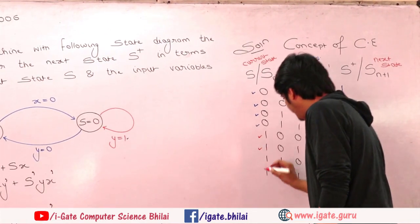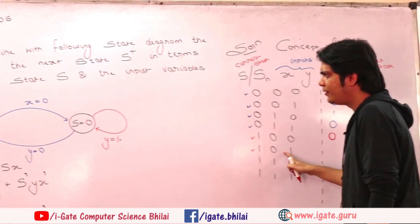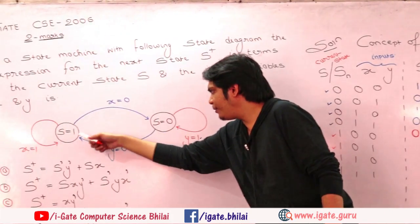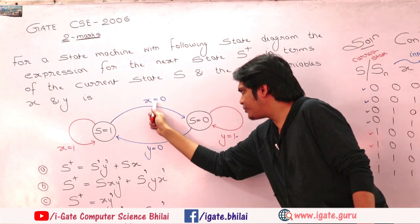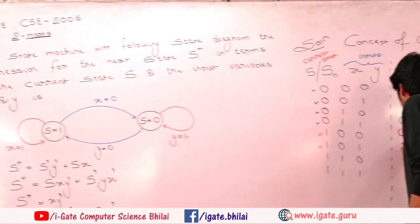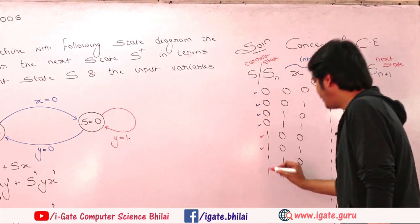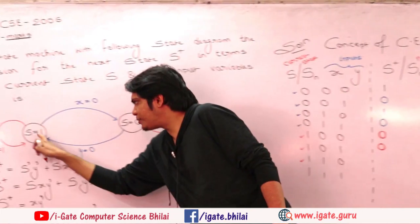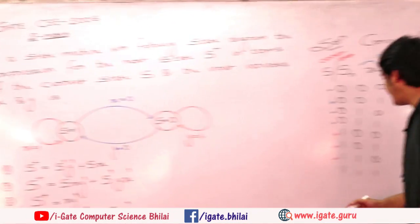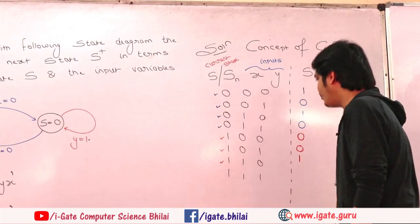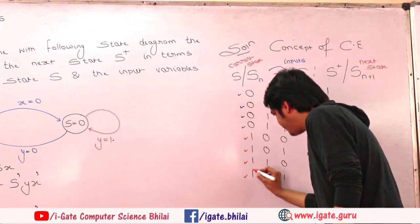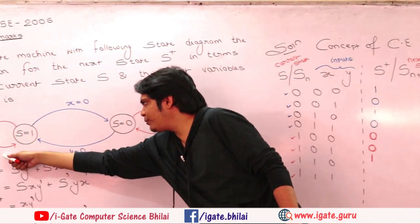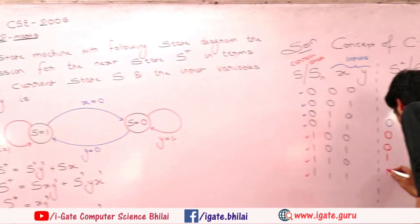For S=1, X=0, Y=1: when X=0, independent of Y, transition happens and output goes to 0. For S=1, X=1, Y=0: output remains unchanged — it was 1 before, still 1. For S=1, X=1, Y=anything: the output remains 1.